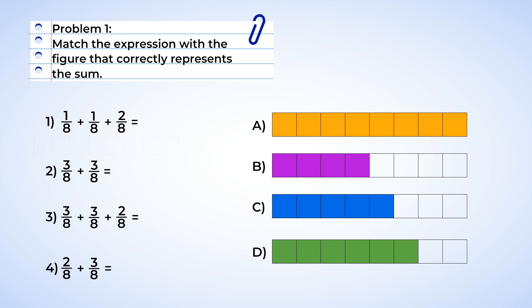Okay, looks like we have one-eighth plus one-eighth, so we would fill in one section for each of those eighths. Next, we add two-eighths — we can fill in two more sections. And we have a total of four sections, or four-eighths. Which one has four-eighths filled in? B. Number one matches with B.